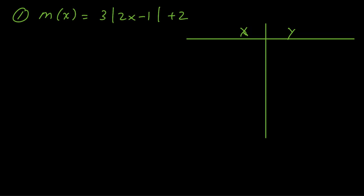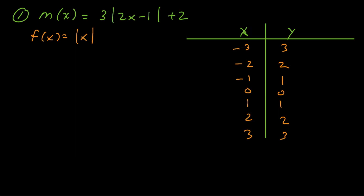For the first problem, we have m(x) = 3|2x - 1| + 2. Thinking about this from the standpoint of composition of functions, the parent function is the absolute value of x. We can plug in easy values like -3, -2, -1, 0, 1, 2, 3, and since absolute value always makes the output positive, we get 3, 2, 1, 0, 1, 2, 3.